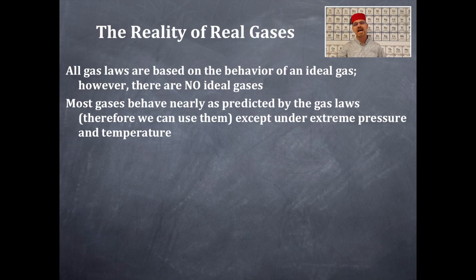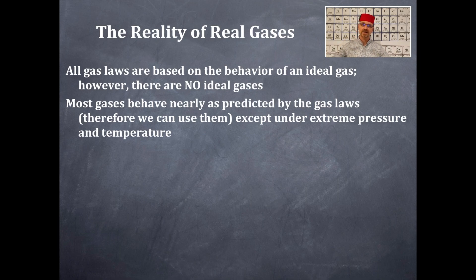Most gases behave nearly as predicted by the gas laws, therefore we can use them — except under extreme pressures and temperatures. That's why people do get together, because you make compromises and you find someone that works close to your ideal mate.